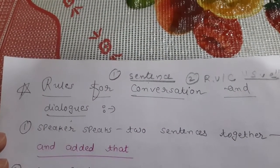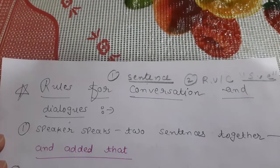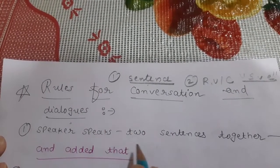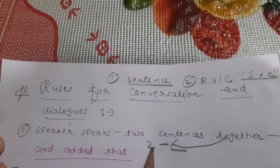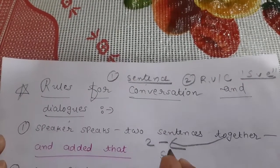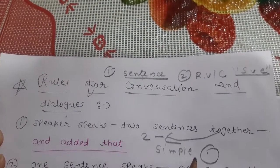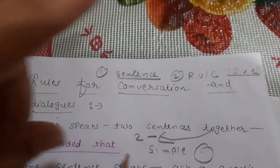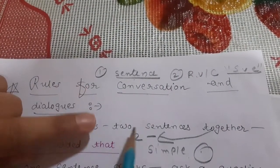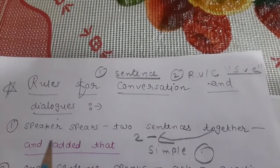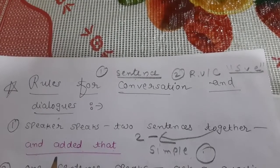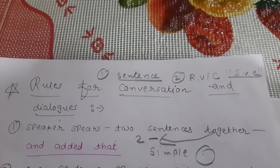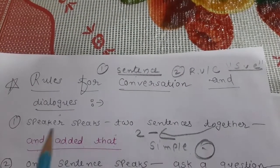If two sentences are simple with a full stop, then to join them we write 'and added that.' If the speaker speaks two simple sentences together, write the first according to the rule, then write 'and added that' before the second sentence to join them.